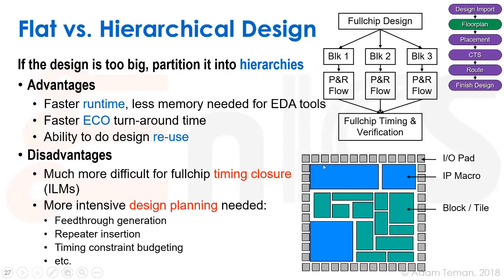We can see a chip that has all these different blocks — maybe these are analog IPs, external IPs, or hard IPs. These are all different blocks that we placed and routed separately, and then we connect them together by making the routes that go between them in these different routing channels.